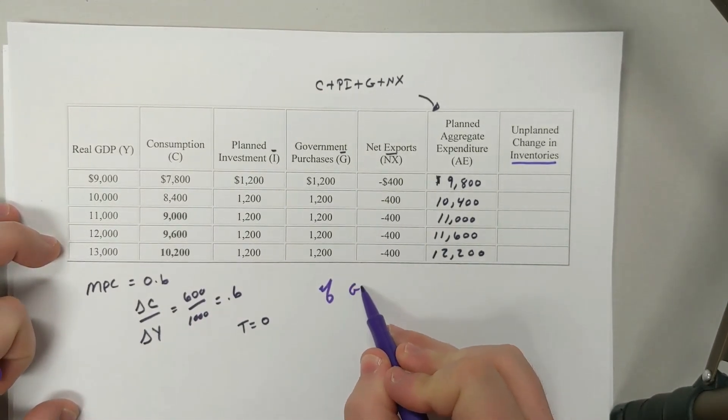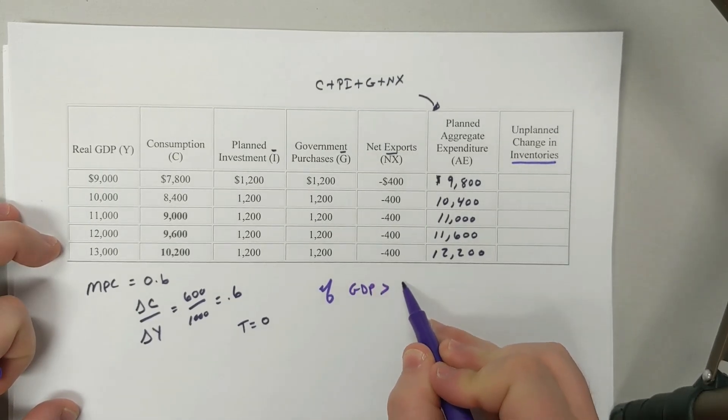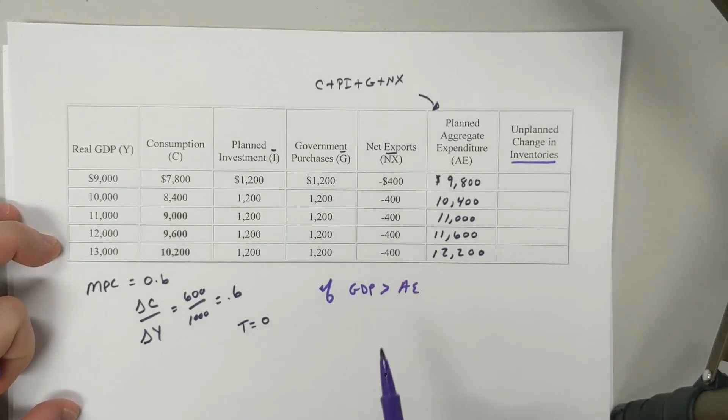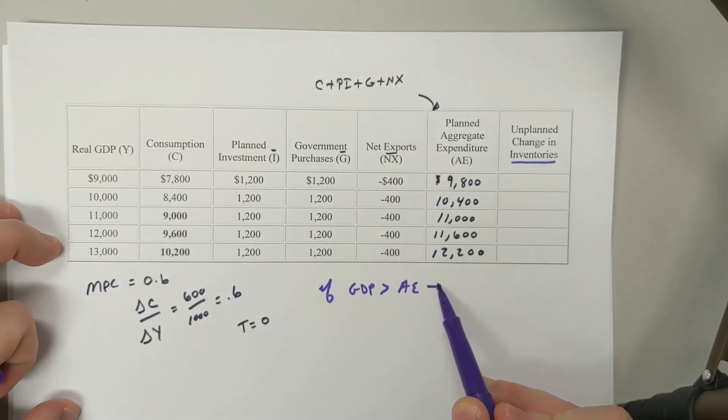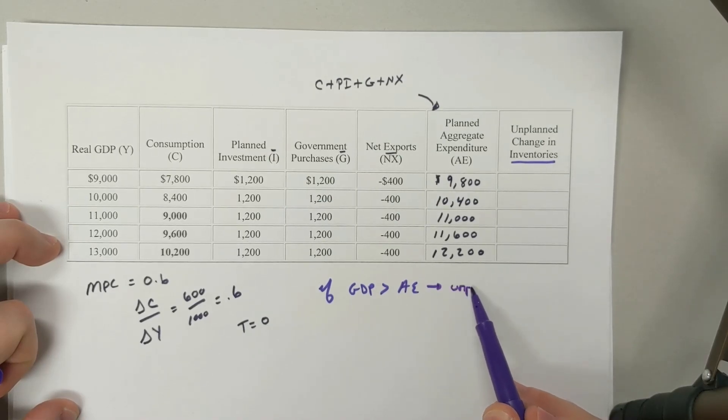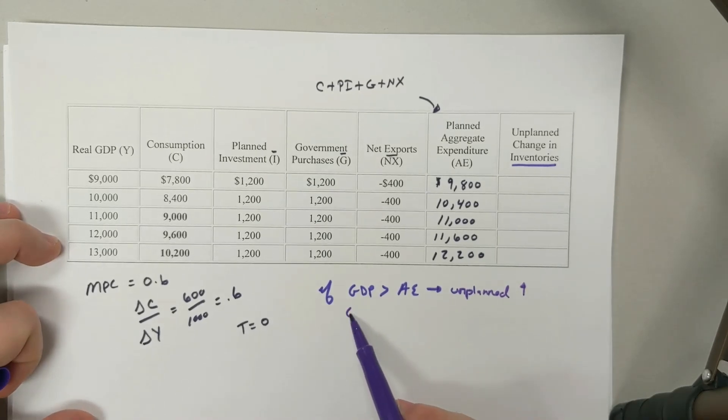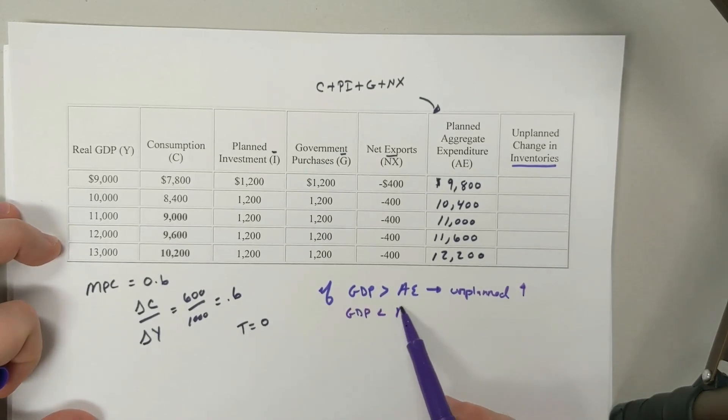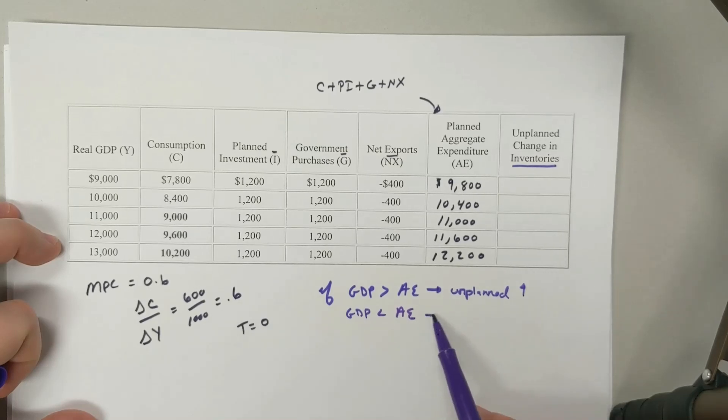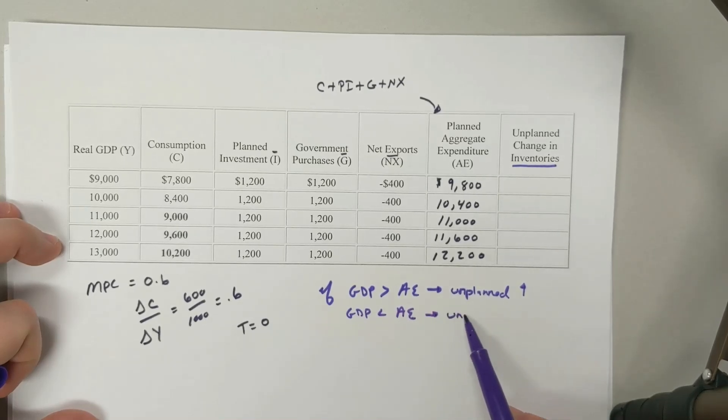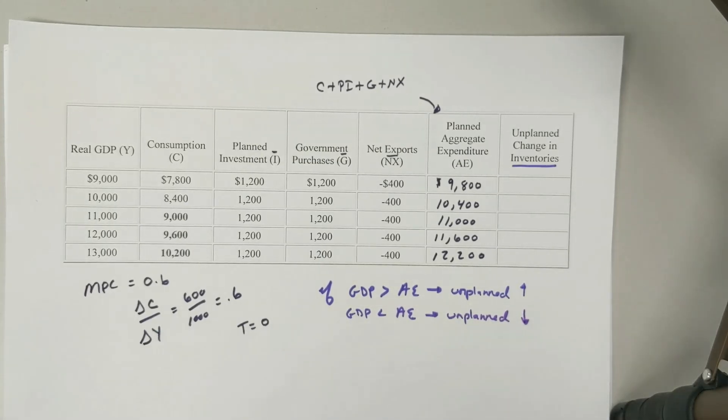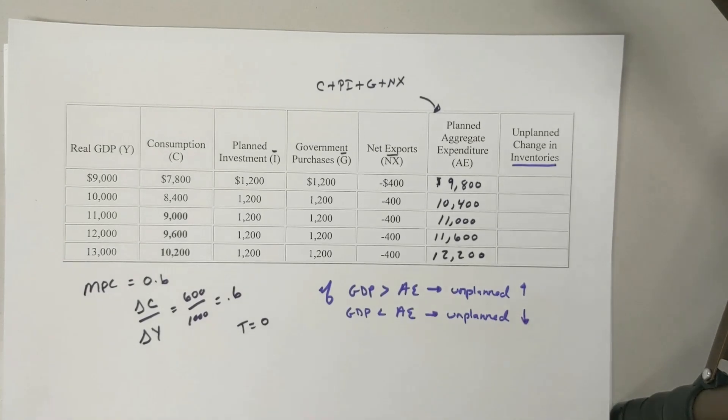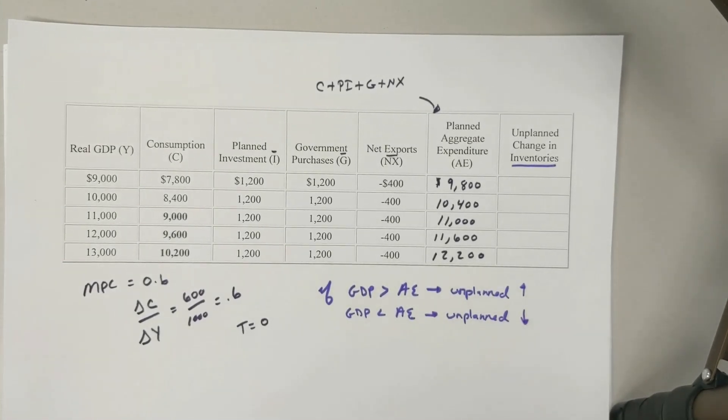If GDP is greater than my aggregate expenditures, we're producing more than we're spending, and so this is going to see an unplanned increase. And if GDP is less than aggregate expenditure, meaning that we're spending a lot, we're taking it out of inventories, so we see an unplanned decrease. Therefore, my unplanned change in inventories is going to be that difference between the two of them.